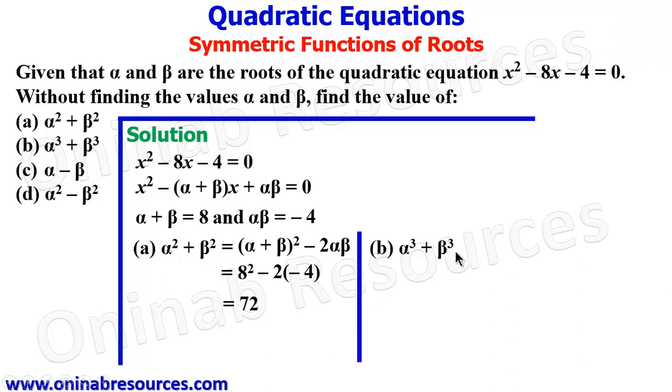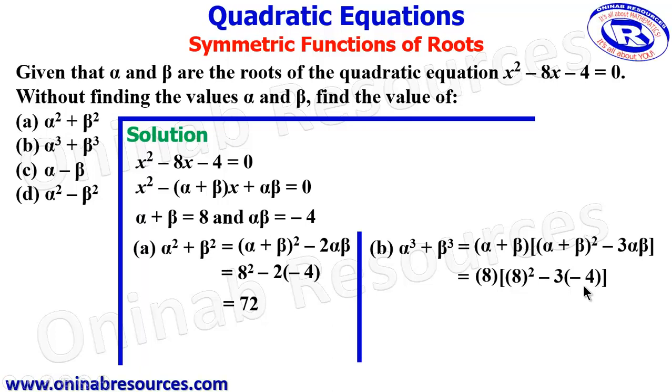Then we go to part (b), alpha cubed plus beta cubed. By expansion, we have alpha plus beta in brackets, then another bracket: alpha plus beta squared minus 3 alpha beta. Substituting alpha plus beta to equal 8 and alpha beta to be negative 4, we have 8 times 8 squared minus 3 times negative 4. Inputting this in our calculator, we have 608, giving the value of alpha cubed plus beta cubed.